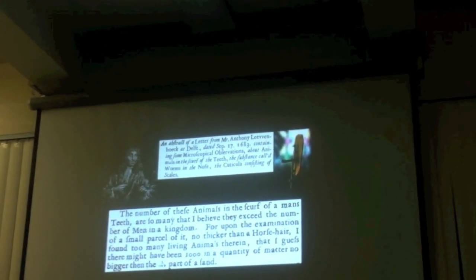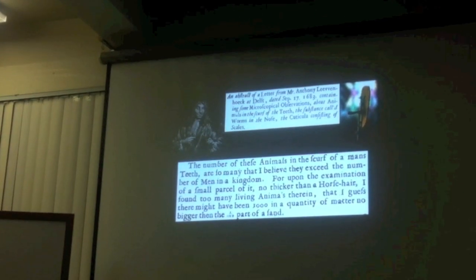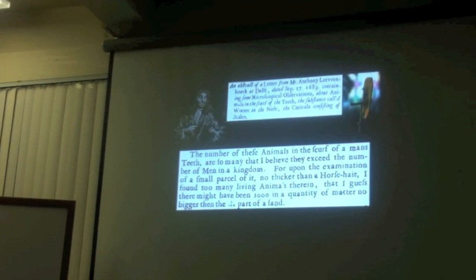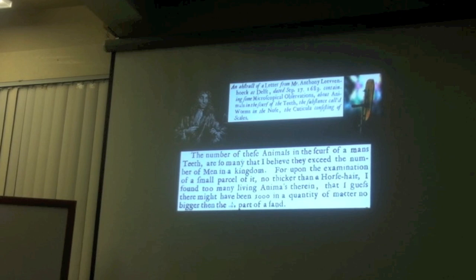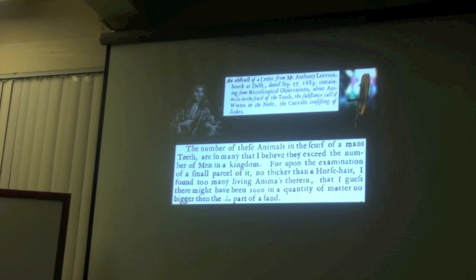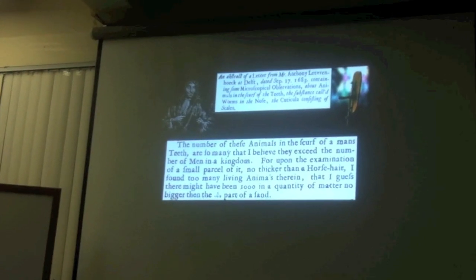This is from a letter by Antonie van Leeuwenhoek, who was the first person to make a microscope — you can see a picture of his little handheld device. This was a letter written in the 1680s describing the first sighting of bacteria by a human being. He took some scurf from between his teeth, put it under his microscope, and found what he called 'animals' — which we now know are bacteria — saying their number exceeded the number of men in the kingdom.